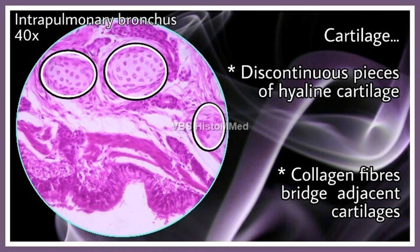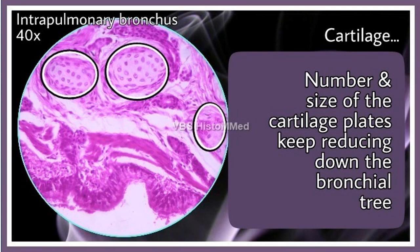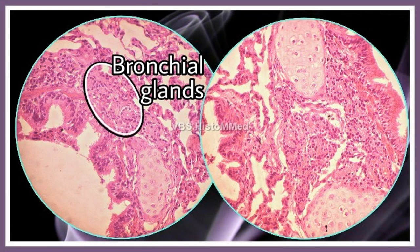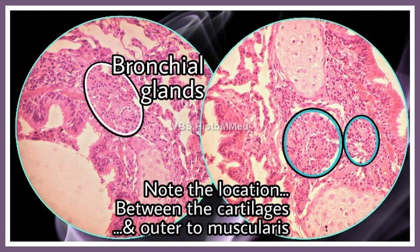The cartilage: once intrapulmonary stages are reached, the cartilage becomes discontinuous, appearing in small islands. In between the islands, collagen fiber bridges can also be seen. The number and size of the cartilage keeps reducing as you go down the bronchial tree. Finally, there is a spot where there is no cartilage at all — from that point onwards the bronchus is relabeled as bronchiole. There are also a few bronchial glands for local secretions, both serous and mucous, located between the cartilages and outer to the muscularis — a very important submucosal location.